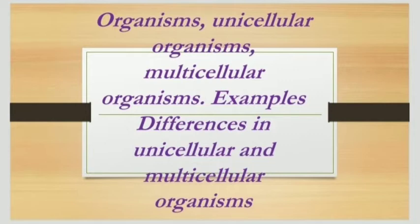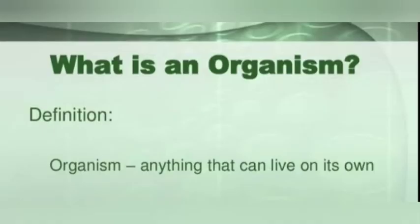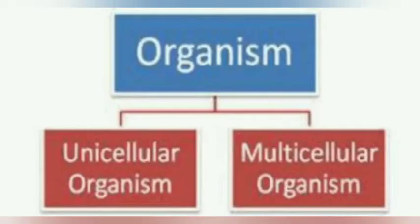Let us see what is an organism. An organism is anything which can live on its own. Organisms are divided into two types: unicellular organisms and multicellular organisms.